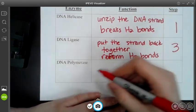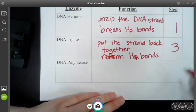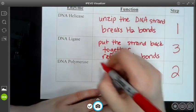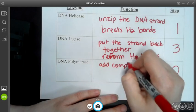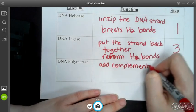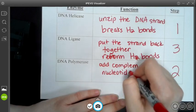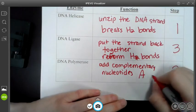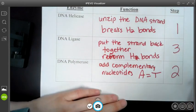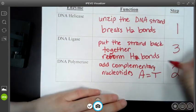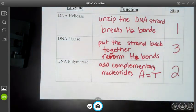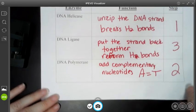Now stage two, this is where the copying actually happens. This is where DNA polymerase is going to add complementary nucleotides. Which means that if it sees an A, it's going to add a T. And that is how DNA polymerase works. So this is just a short rundown on DNA replication.